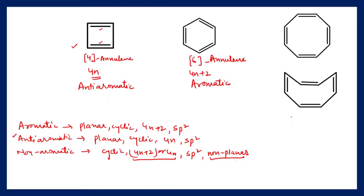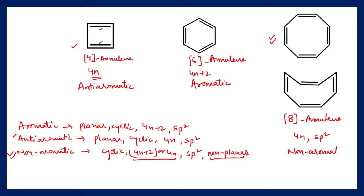The third compound is [8]-annulene. Looking at the structure, it may appear that this compound is planar, but actually this compound is not planar because of the large number of carbon atoms — it adopts a tub-like structure. So this compound is not planar, but it is cyclic, following the 4n rule, and all carbon atoms are sp2 hybridized. Because it is not planar, according to the definition, this compound is non-aromatic in nature.